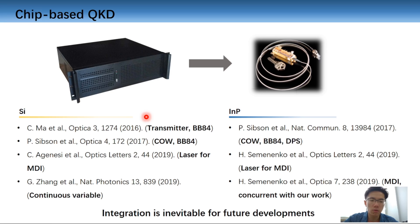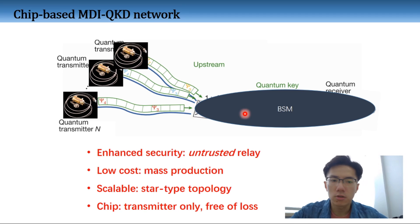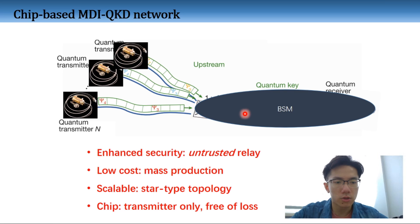By replacing the quantum receiver with a Bell State measurement device, each user holds a transmitter chip. A network-centric structure with untrusted relay is enabled by the combination of silicon photonic chips and MDI QKD. Moreover, the relay holds the expensive and bulky measurement device, which is shared by all users. This structure can bypass the challenging technique of integrating single-photon detectors onto the chip, as the users do not need to perform the quantum measurement. Overall, the chip-based MDI QKD network enables a promising solution for low-cost, scalable QKD networks with an untrusted relay, which has not been demonstrated yet.